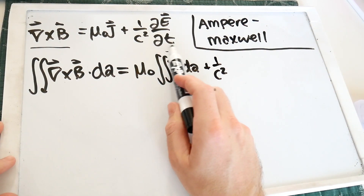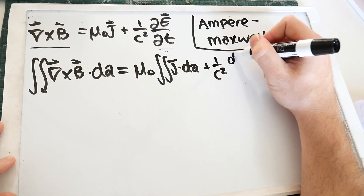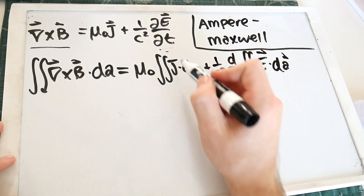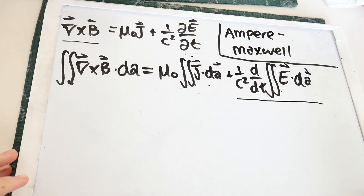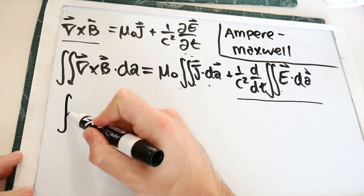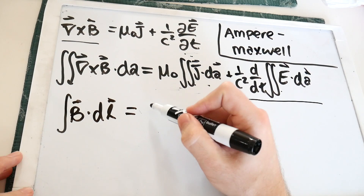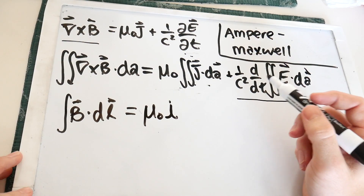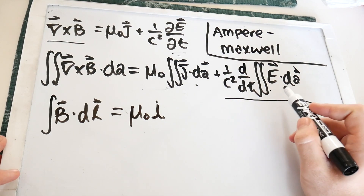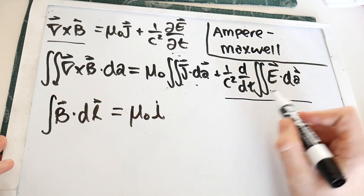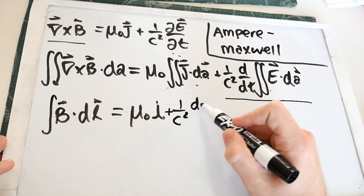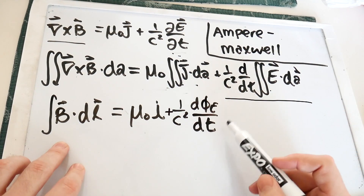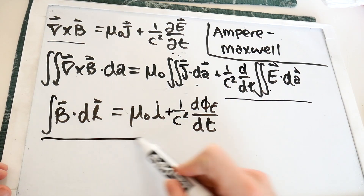Going ahead and pulling the time derivative straight out of the integral as a total derivative, applying Stokes' theorem to the left-hand side turns this into a 1D integral of B dot dL. On the right-hand side, adding up the charge distribution gives us some total enclosed current I. The remaining integral exactly represents the electric flux, so this is just the time derivative of the electric flux — the magnetic analog to Faraday's equation, saying a changing electric field generates a magnetic field. That's the last of Maxwell's equations derived here.